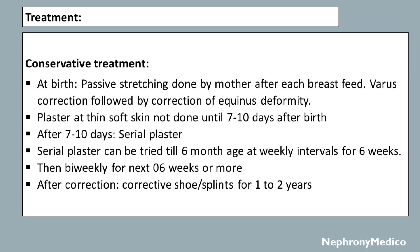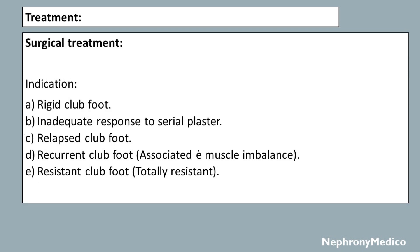Conservative treatment: at birth, passive stretching is done by the mother after each breastfeed, with varus correction followed by correction of equinus deformity. Plaster on thin soft tissue skin is not done until 7 to 10 days after birth. After that, serial plaster is applied at weekly intervals for six weeks, then bi-weekly for the next six weeks or more. After correction, a corrective shoe or orthosis is worn for one to two years.